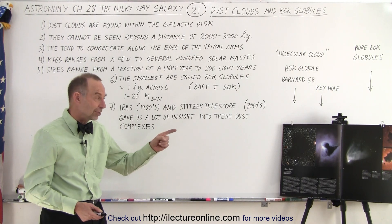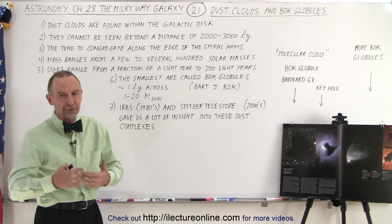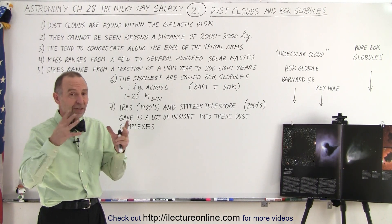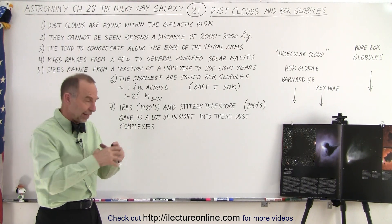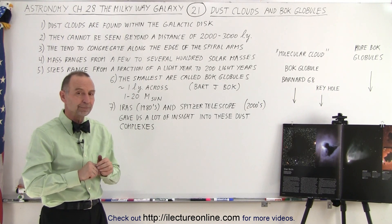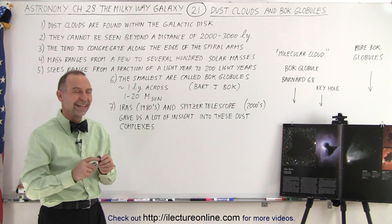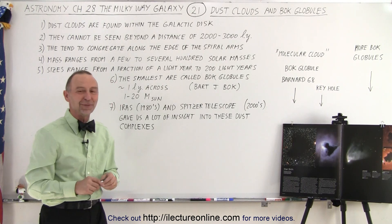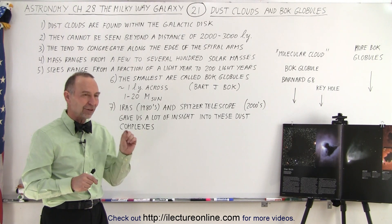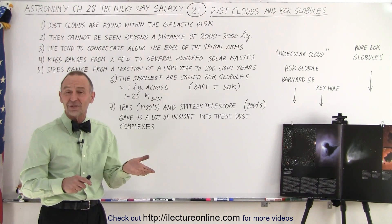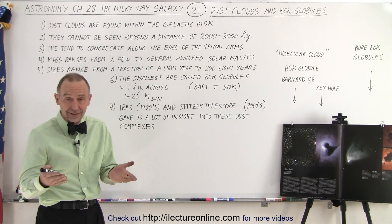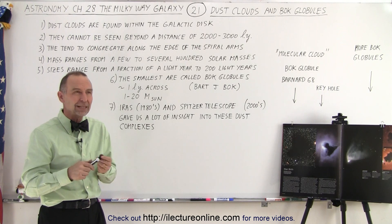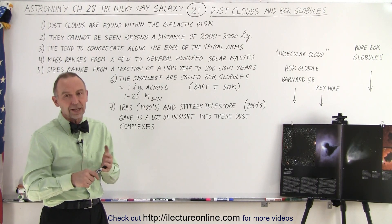Why are these called dust clouds? These particular dark clouds contain a much higher percentage of dust particles than typical gas clouds. Each dust particle contains thousands, millions, or billions of atoms joined together, infused within the gas clouds. They're not your typical dust bunnies — we're talking about dust particles on the order of several hundred nanometers, roughly the size of a wavelength of visible light, containing thousands of atoms. These particles are typically composed of carbon, nitrogen, oxygen, silicon, and potentially even metals.